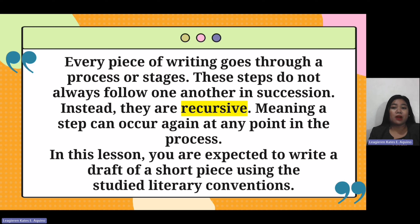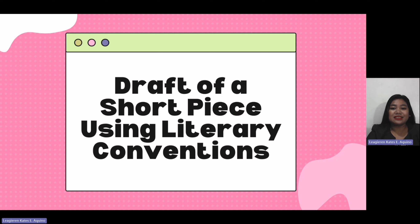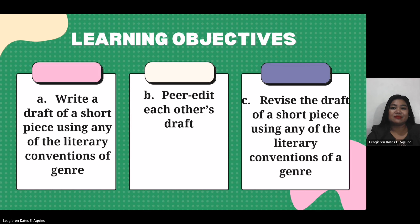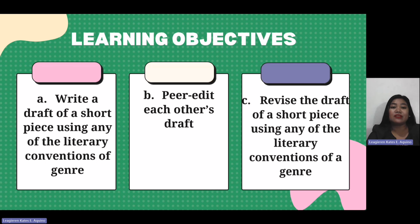Every piece of writing goes through a process or stages. These steps do not always follow one another in succession. Instead, they are recursive — meaning a step can occur again at any point of the process. In this lesson, you are expected to write a draft of a short piece using the studied literary conventions. Our learning objectives are: A, write a draft of a short piece using any literary conventions of a genre; B, peer edit each other's draft; C, revise and draft a short piece using any of the literary conventions of a genre.